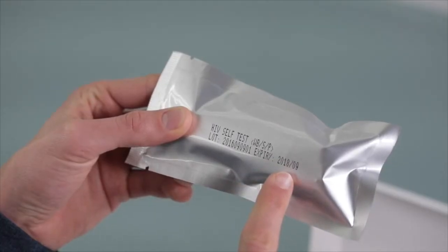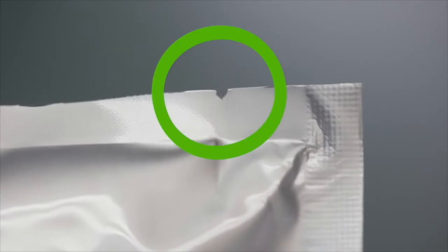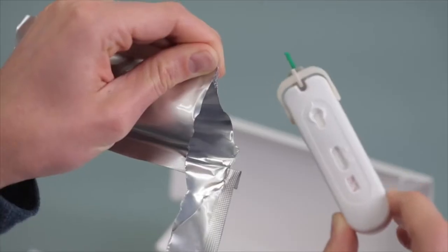Before you open the foil pouch, check the expiry date to make sure it is still current. Open the foil pouch using the tear notch and take out the test. Don't use the test if the foil pouch is damaged.